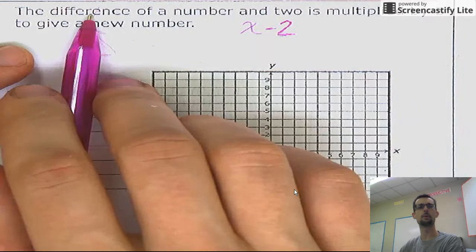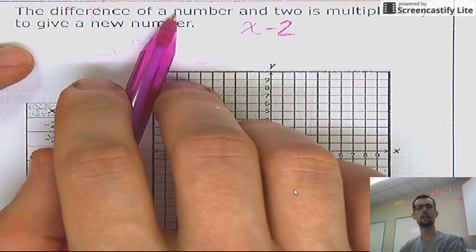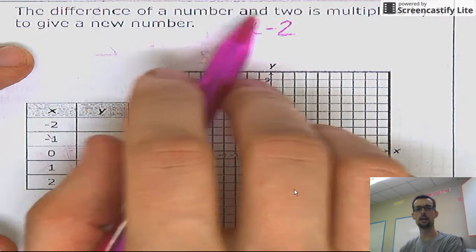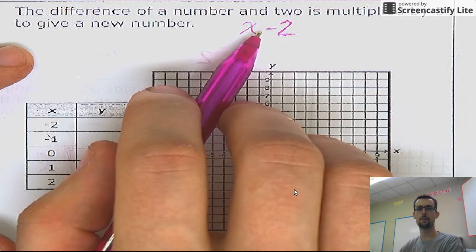No, I think it's like this. I think what it's saying is think of a number and then subtract two from it. That's the difference between that number and two. Okay, that's what I would say.